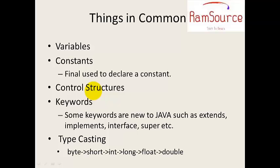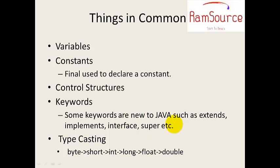Next is control structures. In C, C++ and Java, control structures are similar — if, if-else, for, while, do-while — all these come under control structures. However, Java has certain additional keywords — for example, extends for inheritance, implements for interfaces, and interface itself. We will see these in detail in upcoming sessions.